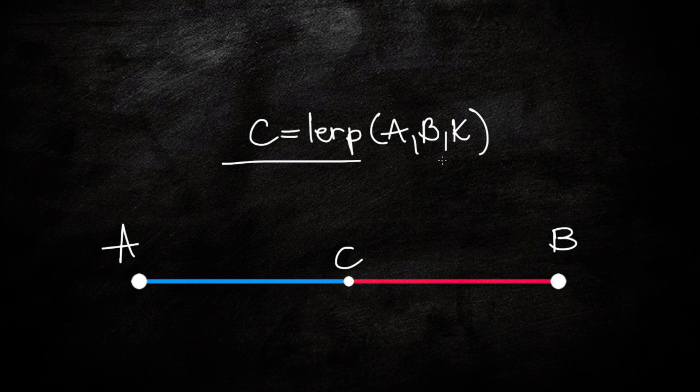So far we have point A, point B, and point C, whose position is determined by the linear interpolation, which we're going to write lerp for short, between A and B by the value k. This is all we need to define the position of point C so far.